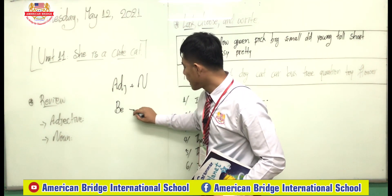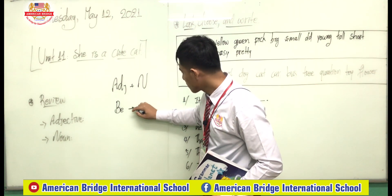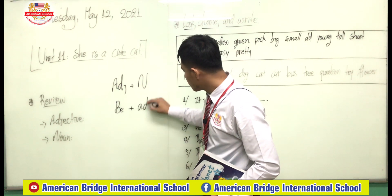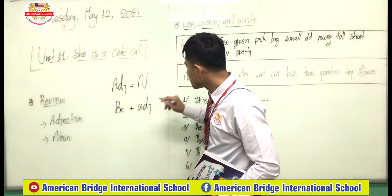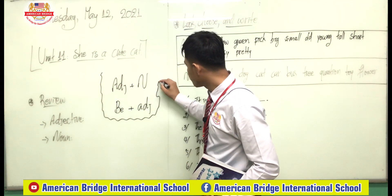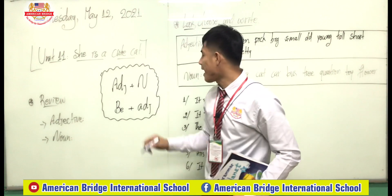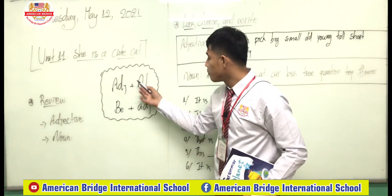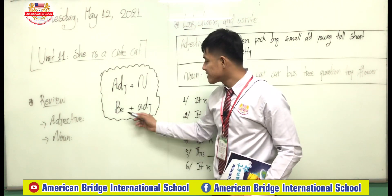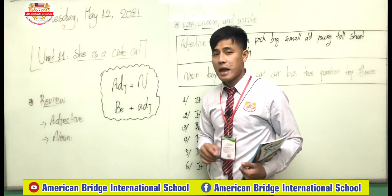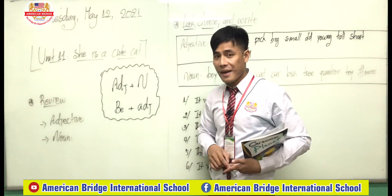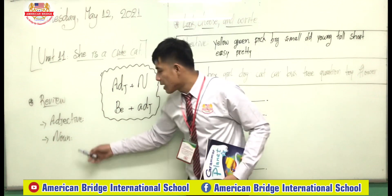Adjectives also always stay after 'to be.' You guys already know about 'to be' — to be means am, is, are. So here are the two locations of an adjective: before the noun and after to be. In the present tense it's am, is, are, and in the past it's was, were.